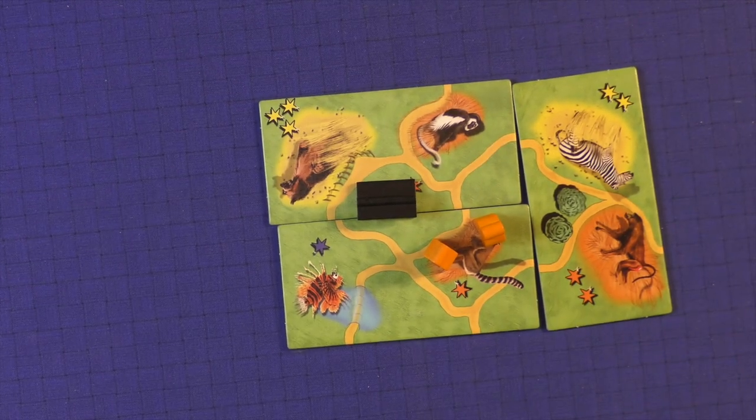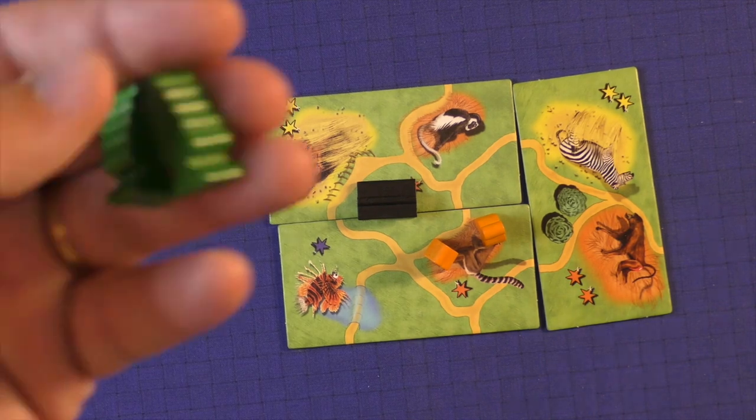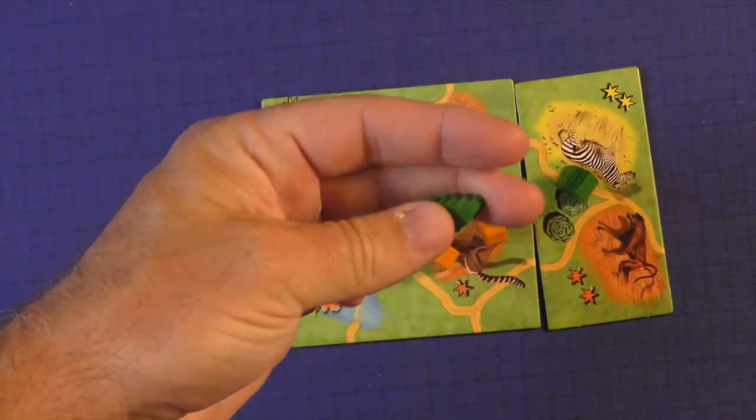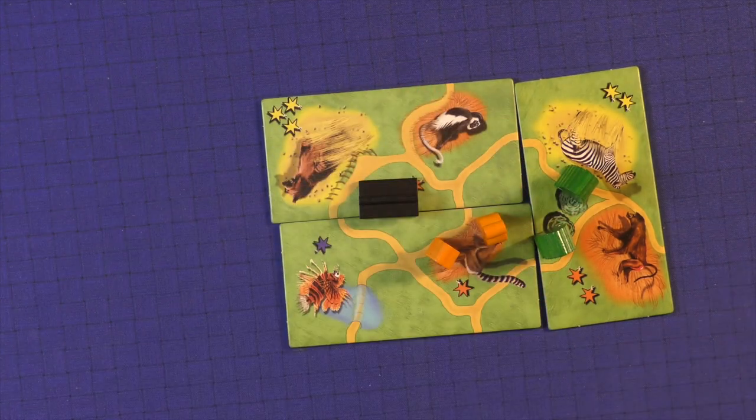Now, whenever there's a bush there, whoever has the most bush, same thing, will get trees, and you'll add these to your park. And whoever has the second most will get one.